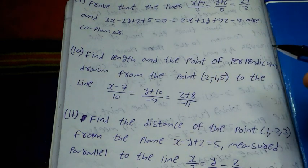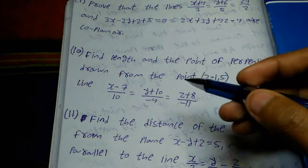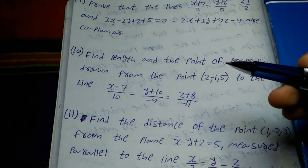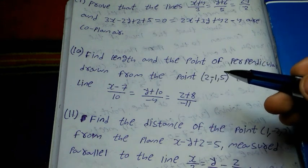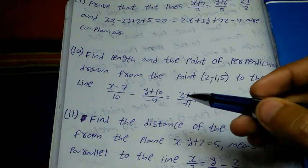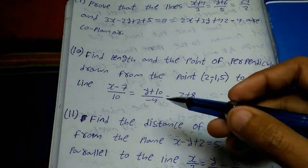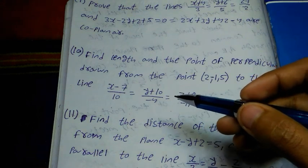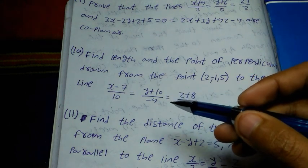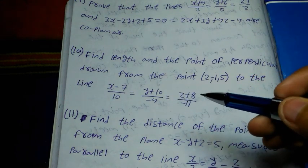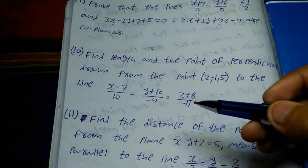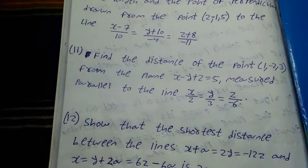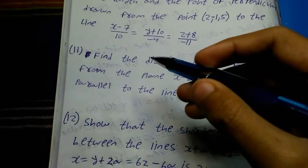Number 10 question: find the length and the foot of the perpendicular drawn from the point (2, minus 1, 5) to the line (x minus 7)/10 equal to (y plus 10)/(minus 4) equal to (z plus 8)/(minus 11).